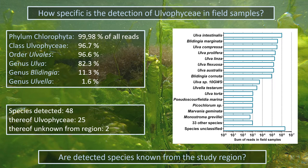The detection of Ulvophyceae in our field samples was relatively specific. Only 3.3% of all sequences that could be classified did not belong to this class, and more than 90% of all reads represented the two genera Ulva and Blidingia only. Altogether, we detected 48 species and 25 of them were Ulvophyceae. The 11 most abundant species all belonged to the genera Ulva and Blidingia, and in one case Ulvella, as shown on the right. The first 8 species with particularly abundant reads are exactly those Ulvophyceae that are generally considered as the most abundant in northern Germany.